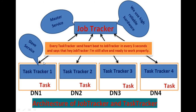The task tracker sends a heartbeat to the job tracker at regular intervals, saying 'Hey job tracker, I am still alive and ready to work properly.' After every interval, the job tracker assigns tasks to those task trackers which are active and ready to work. The job tracker assigns tasks to nearby task trackers.